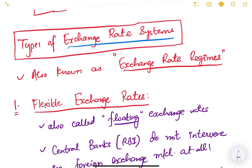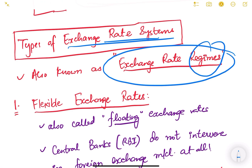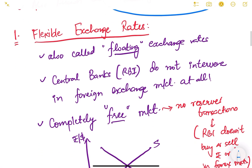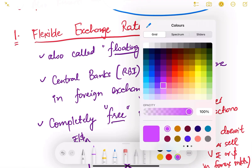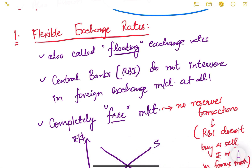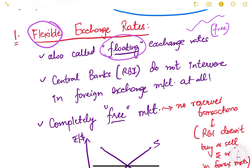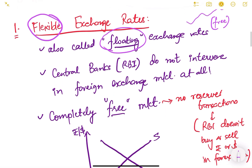Exchange rate systems are also known as exchange rate regimes. The first type is the flexible exchange rate regime, also known as the floating exchange rate regime. The movement is free — they are free floating — and that is why they are called flexible.